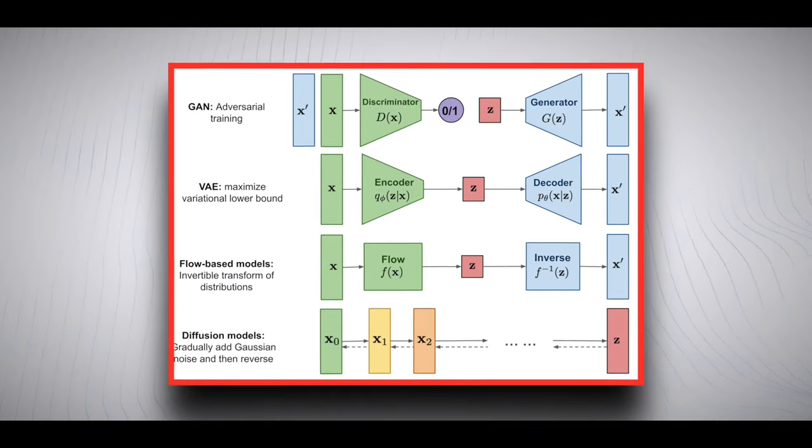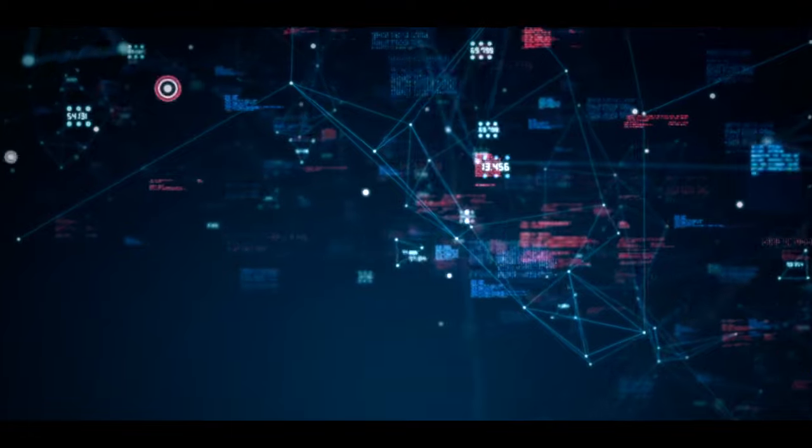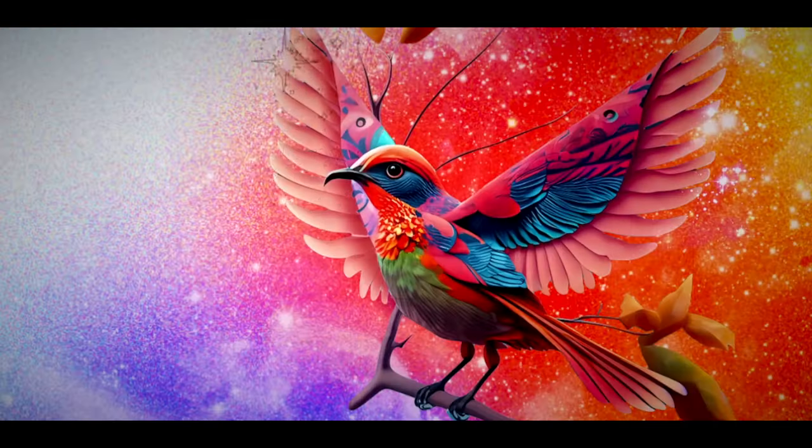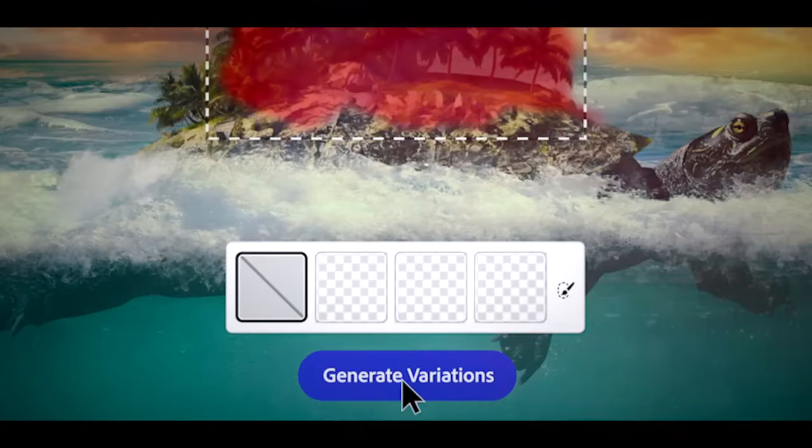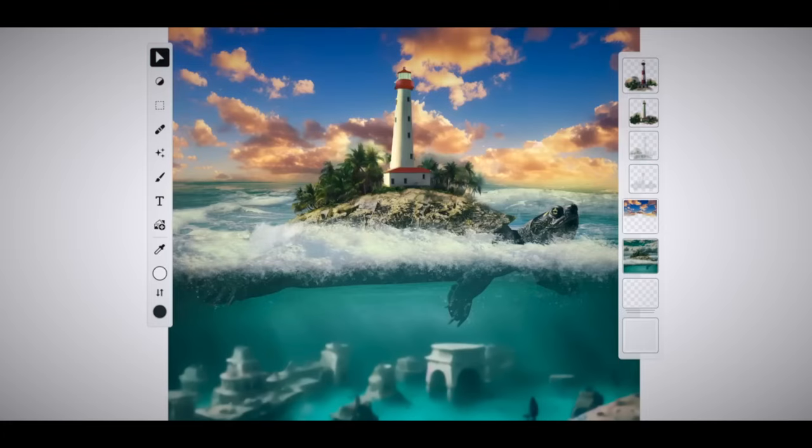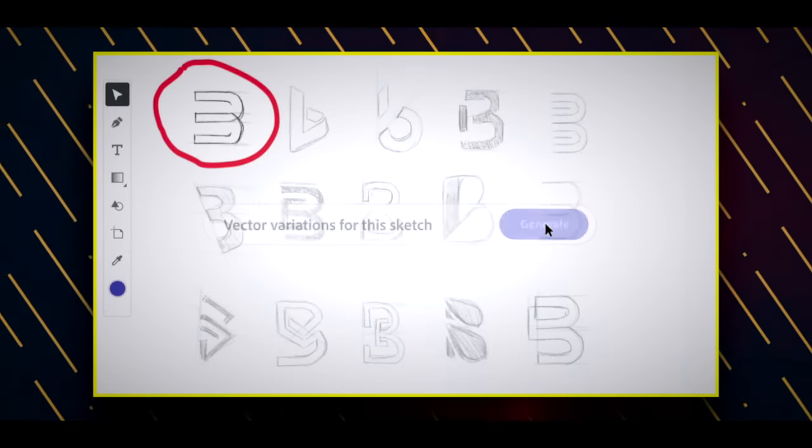At the core of this refinement process is the diffusion decoder, a specialized type of neural network. This neural network leverages initial information in conjunction with the noise, meticulously refining the data over multiple steps to ultimately craft the 3D shape. The beauty of this method is its reliability. It is highly dependable and does not produce distorted or inconsistent shapes.